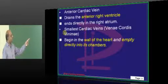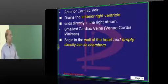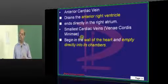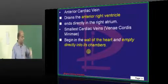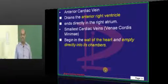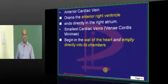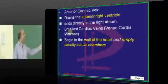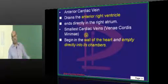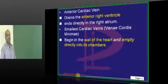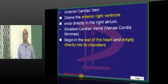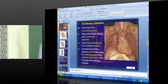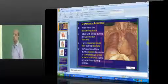Then we have the smallest cardiac veins, called venae cordis minimae. They drain the venous output directly from the wall of the heart — because the heart, like any other muscle, needs venous drainage. The venae cordis minimae directly empty into the chambers. That is all about coronary circulation in anatomy, which you need to be very sure about.